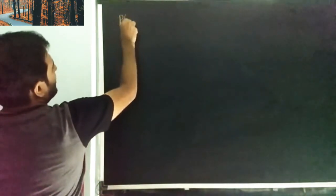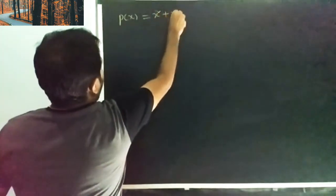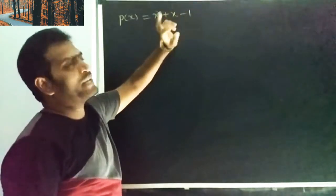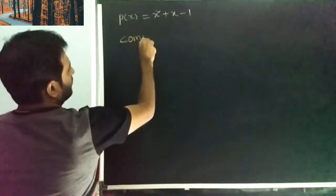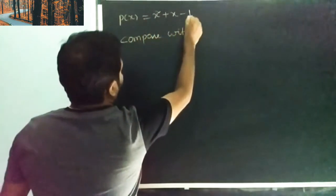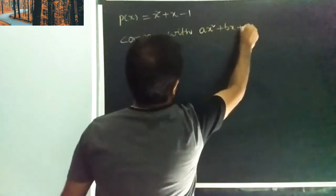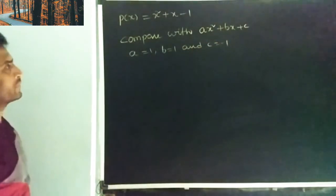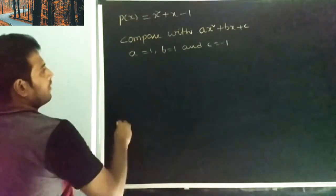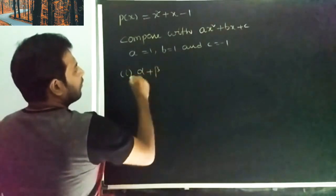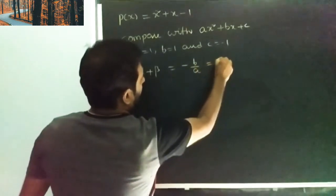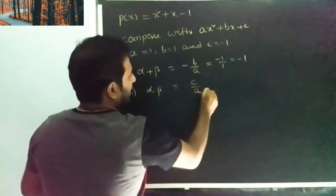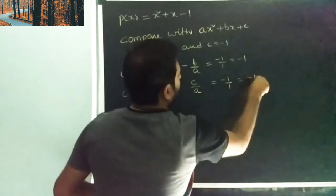Problem: P of x is equal to x square plus x minus 1. This can be written in the form ax square plus bx plus c. Comparing, A value is 1, B value is 1, and C value is minus 1. I will explain every formula using these three values.